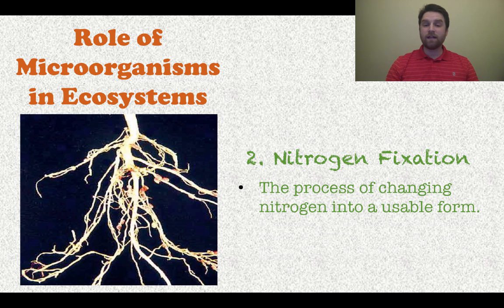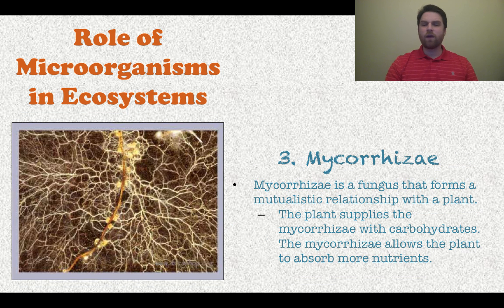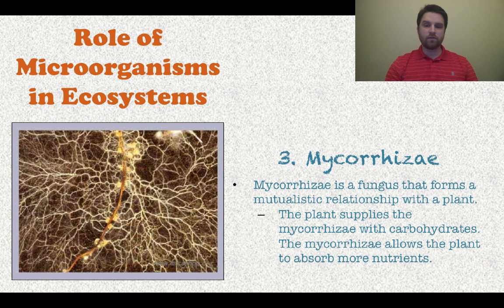The other role microorganisms play is nitrogen fixation. Some bacteria — some of these microorganisms — can actually change nitrogen from a non-usable form into a usable form. This picture shows some roots with little nodules on them. Those nodules are actually full of nitrogen-fixing bacteria. Third, we have mycorrhizae — a fungus that forms a mutualistic relationship with a plant. The plant gives the mycorrhizae carbohydrates to survive, and the mycorrhizae allows the plant to absorb a lot more nutrients as a result.